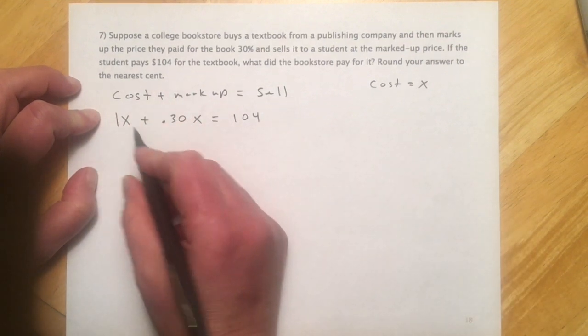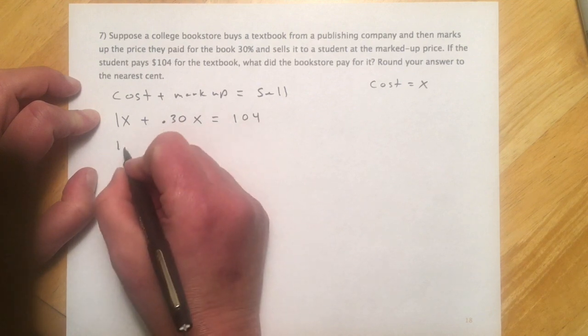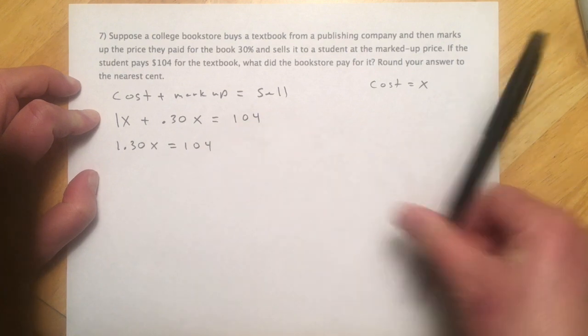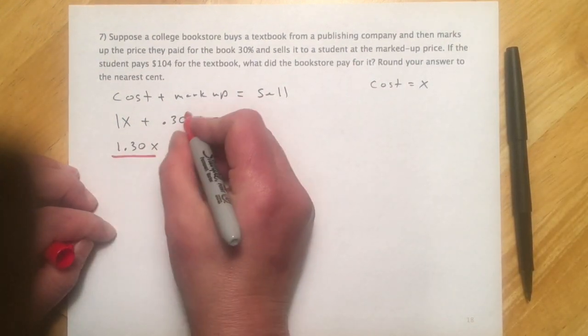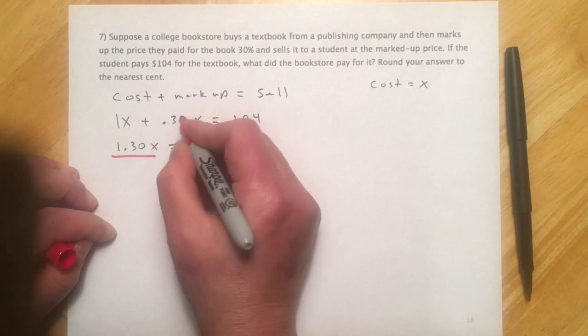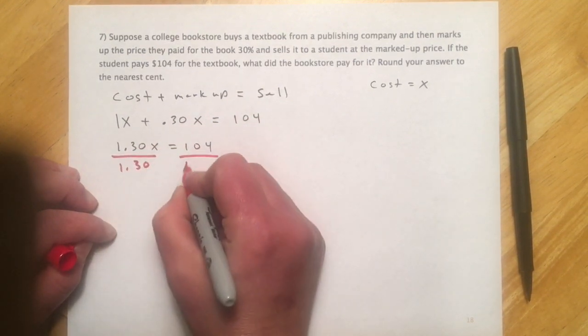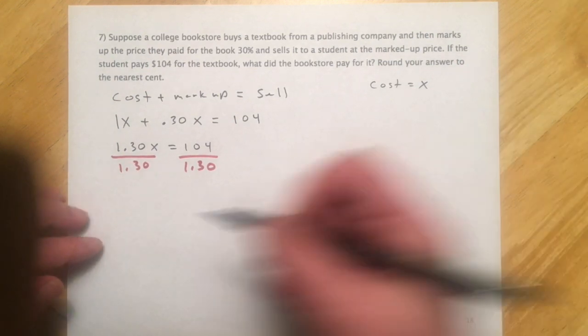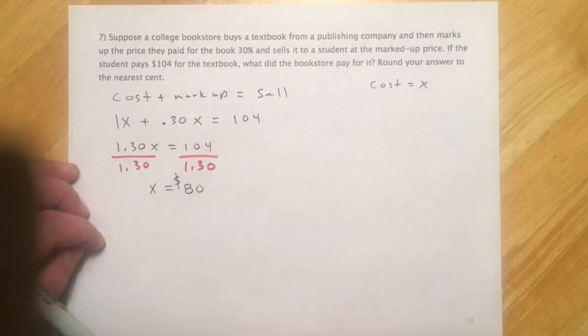So now I have invisible one again. So 1 plus 30 is 0.3, so 1.30x equals 104. And then just divide over that 1.3 there. And that came out to $80. So it looks like x is $80.